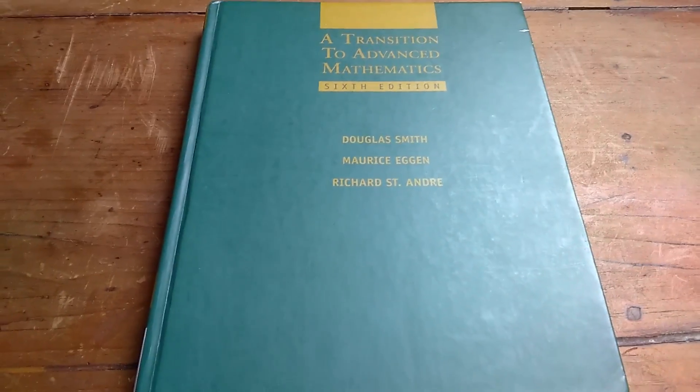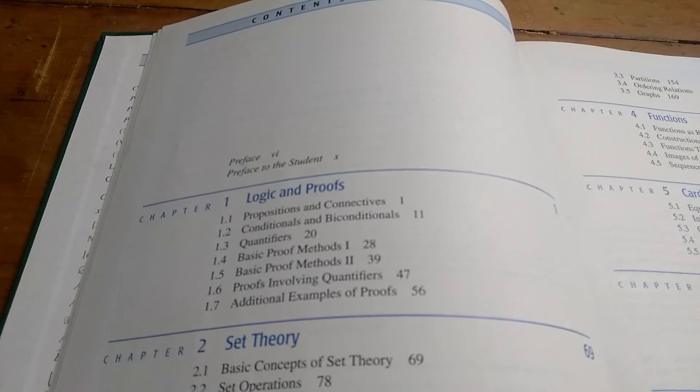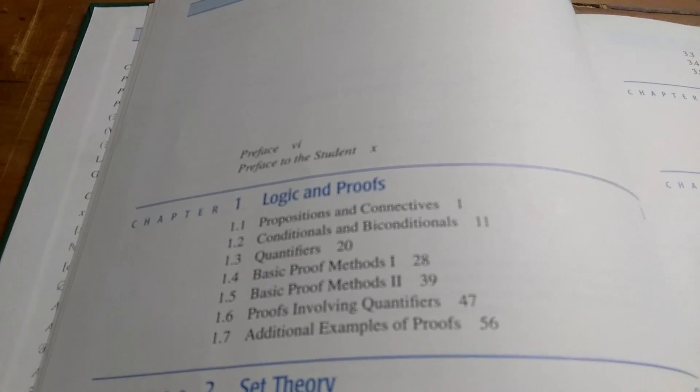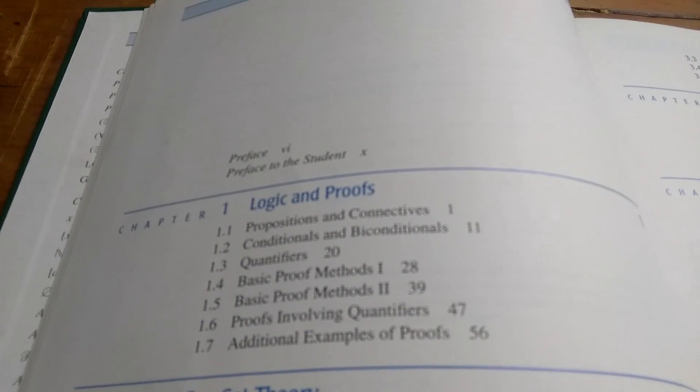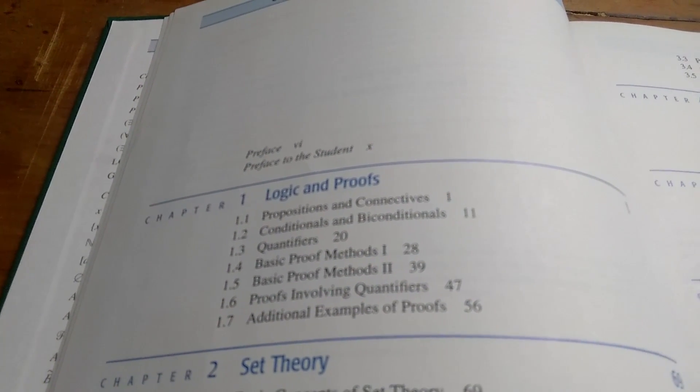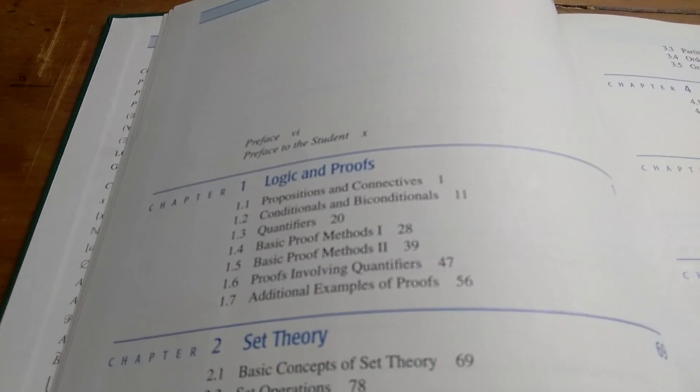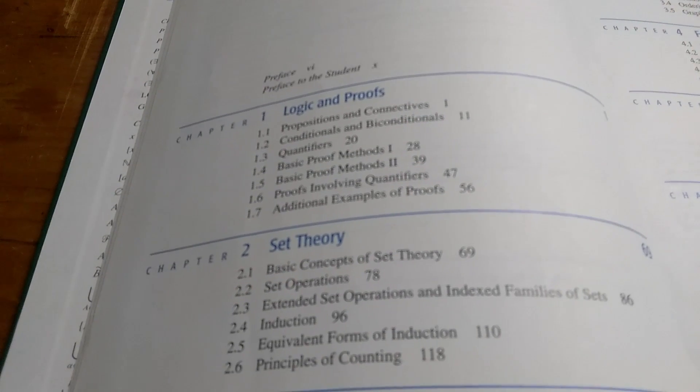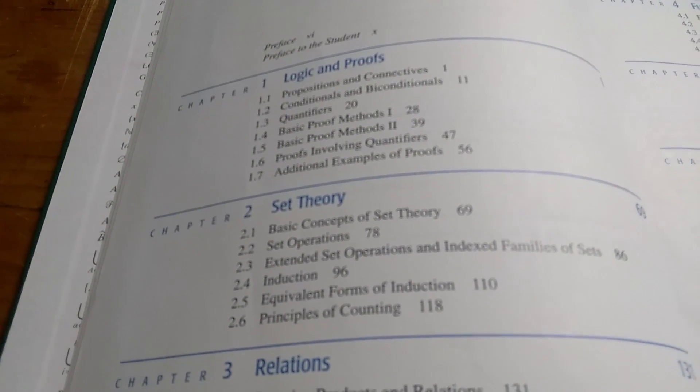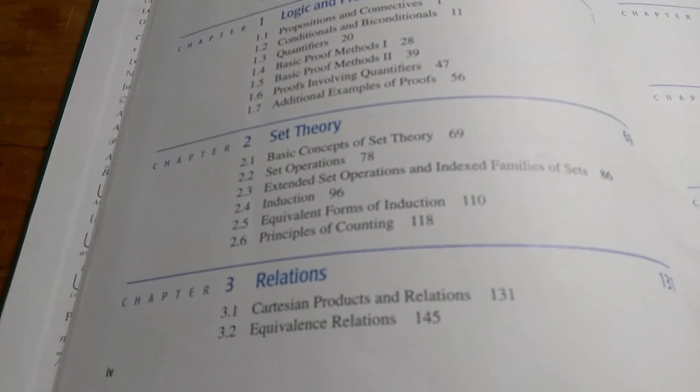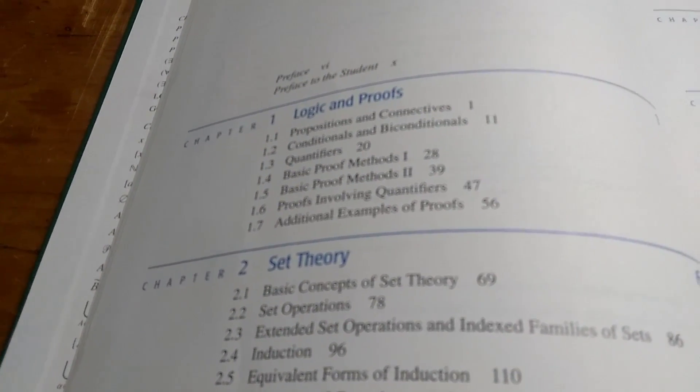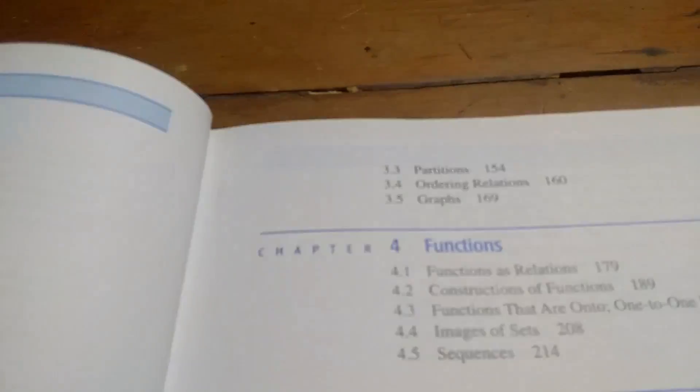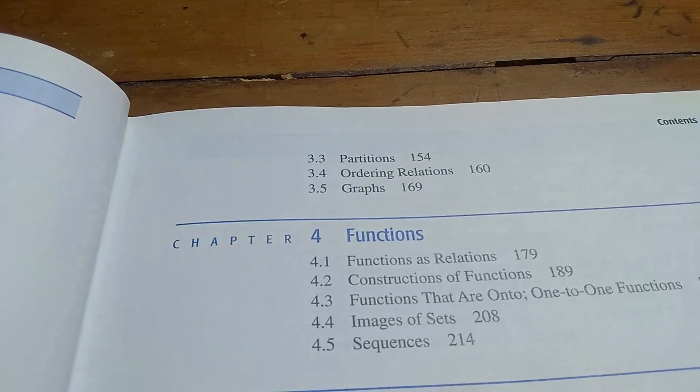Let's take a look inside this book. The book starts with logic and proofs, covering all the important topics in mathematical logic, then goes on to set theory and relations - all very core topics in mathematics. It talks about partitions, ordering relations, and graphs.